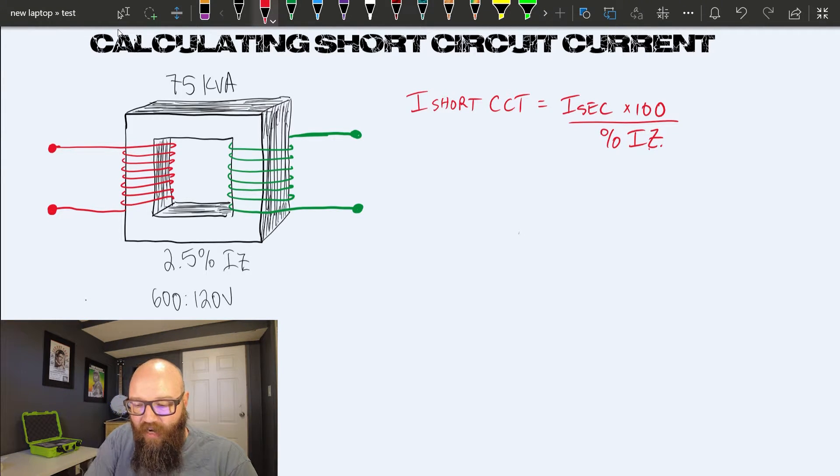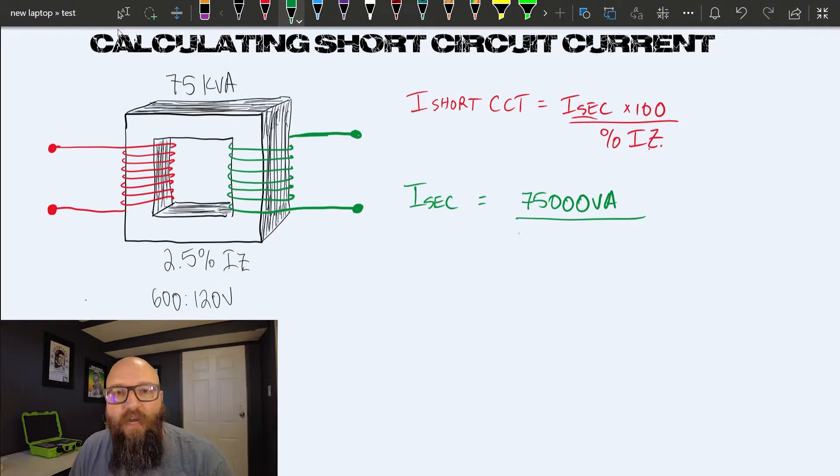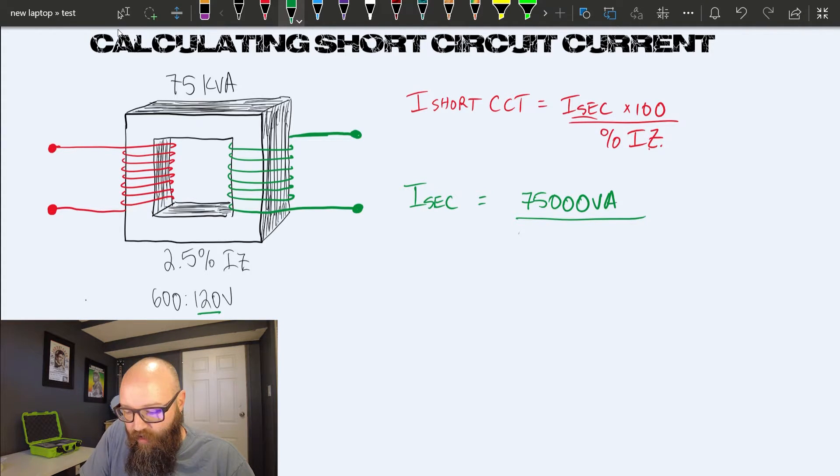Before we do that, I need to know my I secondary. I secondary in this case equals my VA rating of 75,000 VA divided by—in this case it's a single phase transformer, so I don't have to worry about using root three. I do need to grab that line voltage though. Our line voltage on the secondary is 120 volts. So 75,000 VA divided by 120 gives me a secondary rated current of approximately 312.5 amps.